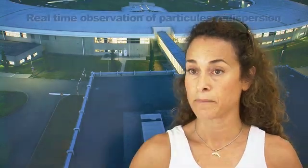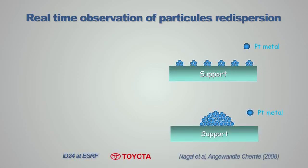In the second example, we will address the problem of particle sintering. One of the major goals in automotive catalyst research is to avoid the problem of nanoparticle sintering, which is the increase in size of very small metal particles as they are exposed to high temperatures in a catalytic converter. In this work, the Toyota team came to the ESRF and carried out experiments on beamline ID24, and they were able to follow the evolution in time of the size of these nanoparticles in situ and in real working conditions.